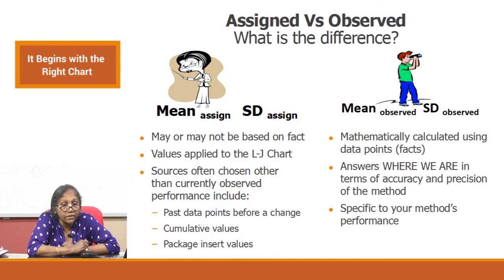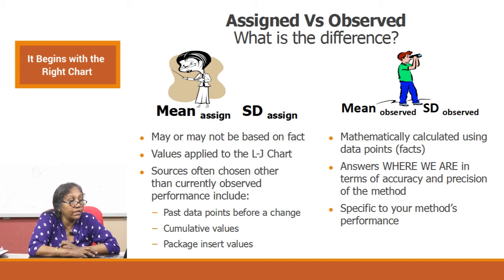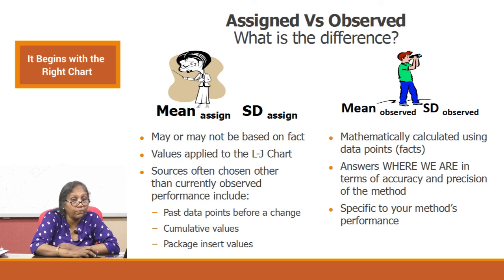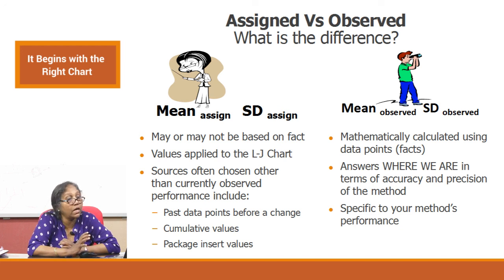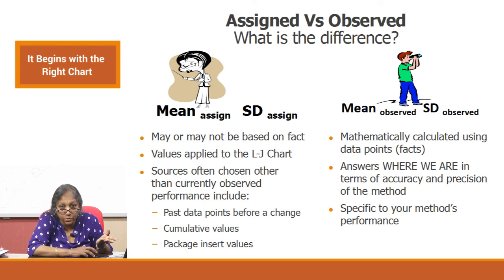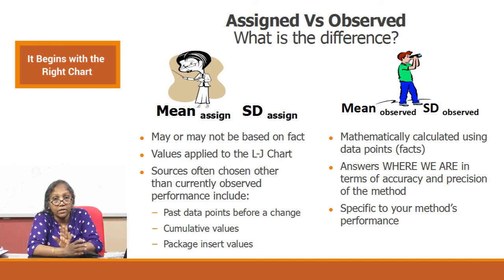These are the problems when assigning wrong numbers on your graph. The assigned mean and SD versus observed mean and SD may not align. Values applied on an LJ chart often come from sources other than current observed performance — past data before a change, cumulative values, or package insert values. When you put actual observed values on your chart, these are mathematically calculated using data points — they reflect your specific method's accuracy and precision — and that is how your assigned values must be defined.